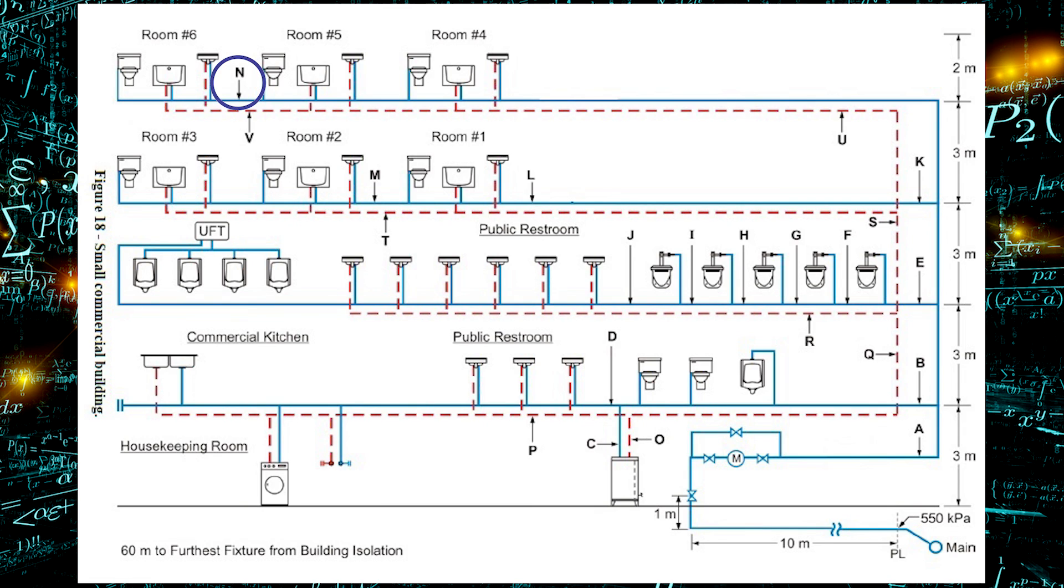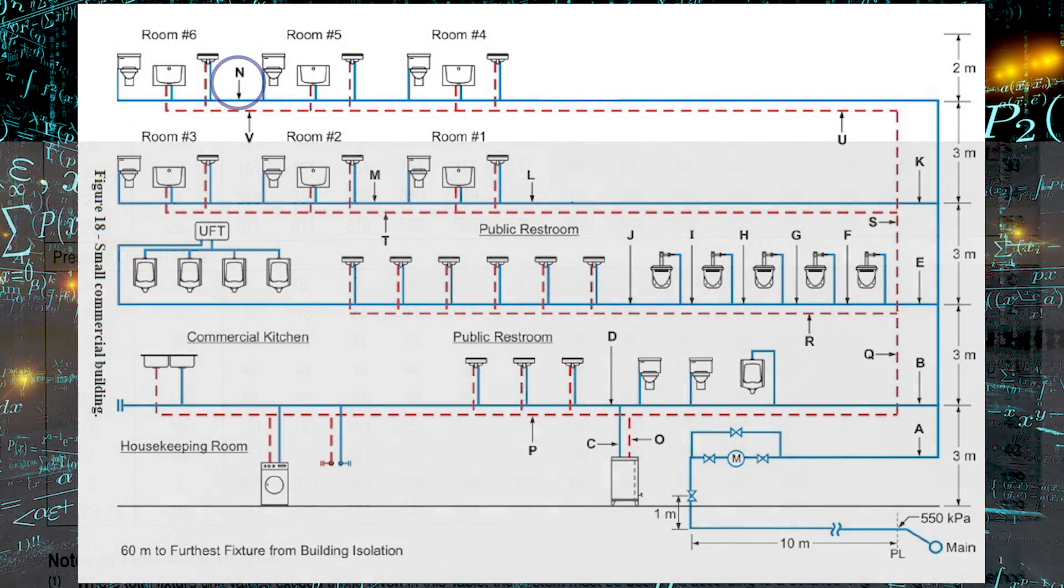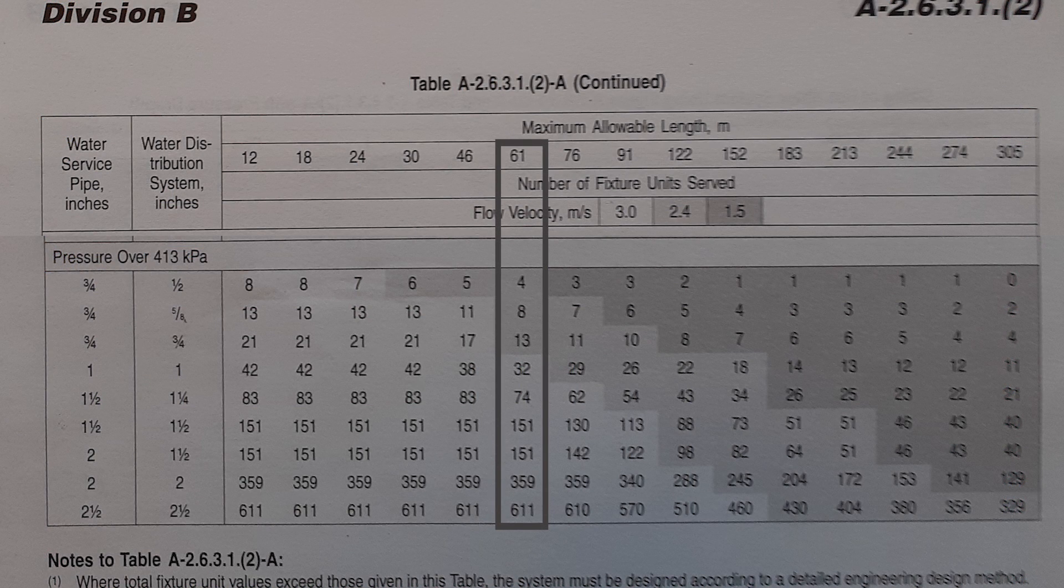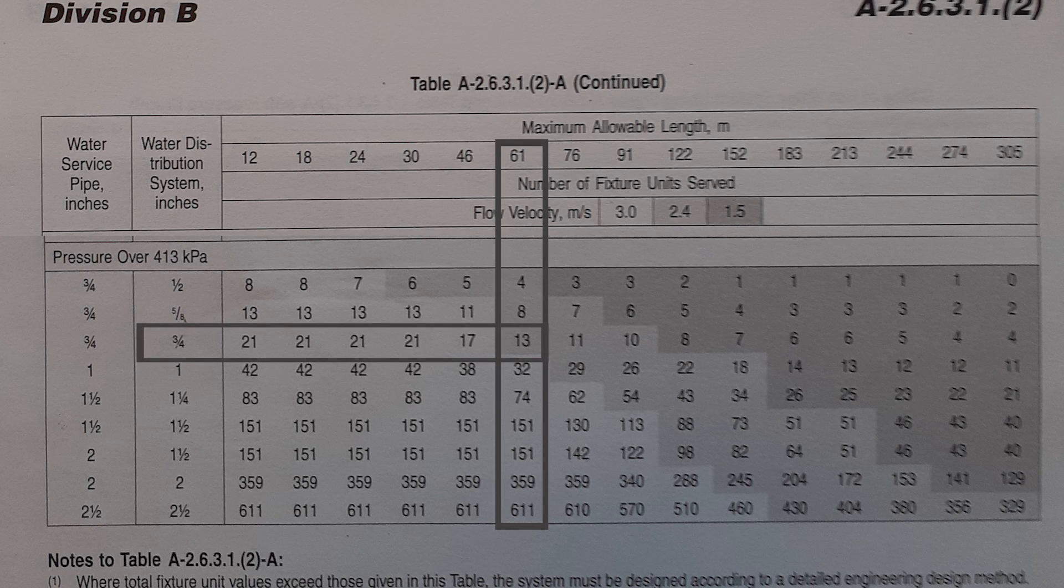We're serving a water closet, a bathtub, and a lav. You add those up you get 8.2 fixture units. Once again I come down my table at 61 meters of developed length and I'm looking for 8.2. I don't get it at five-eighths. That's only good for eight but I can go down to three-quarter and that's good to 13 fixture units. So three-quarter it is.